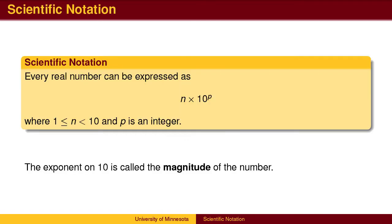This is scientific notation. Every real number can be expressed as a number n between 1 and 10 multiplied by an integer power of 10. The number n will have a single digit to the left of the decimal. The power of 10 counts how far and in which direction to move the decimal to return to the standard representation of the number. The exponent on 10 is called the magnitude of the number.